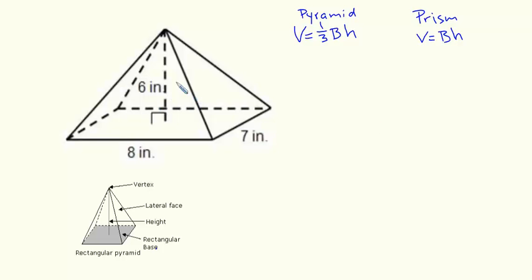So three of these pyramids could fit into a prism with similar dimensions. That's why we have to multiply our dimensions by one-third. So here we go, we have one-third area of the base.